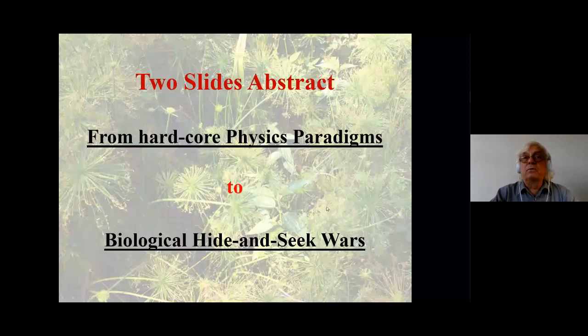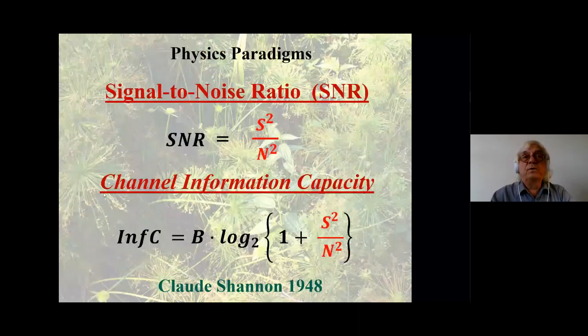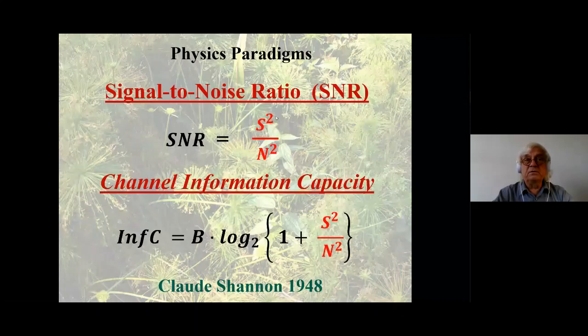Here we're talking about physics, information theory, and glycosylations. There will also be some consequences for patents and related matters. So here are the physics paradigms — the first abstract slide. We're going to talk about two things in terms of the physics: signal-to-noise ratio, and Shannon's channel information capacity. I've marked the power of signal over the power of the noise in red because that's going to be a focus point of this lecture.